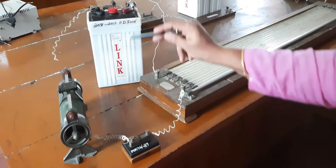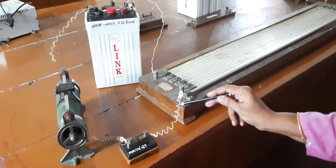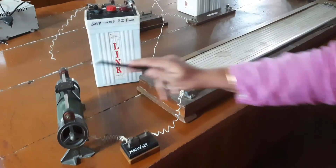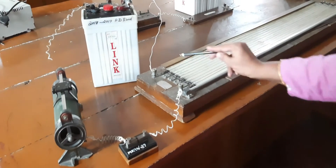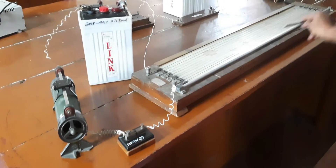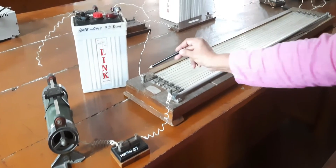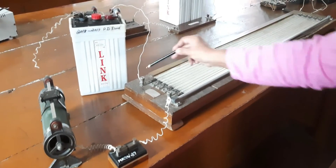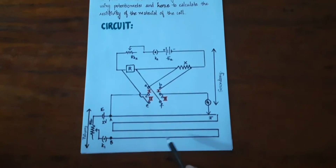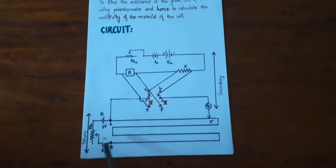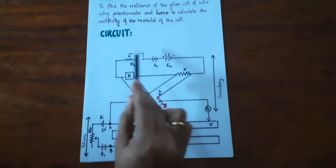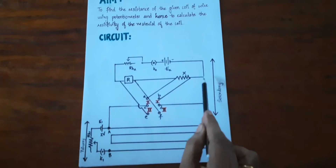The primary circuit consists of a battery, rheostat, key, and the 10-meter long potentiometer wire. These are the two ends of the potentiometer. Coming to the circuit once again, this is the primary circuit and this is the secondary circuit.